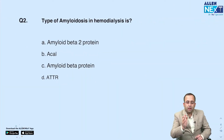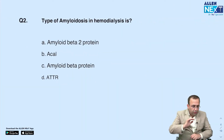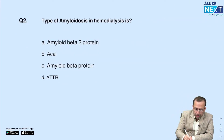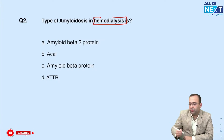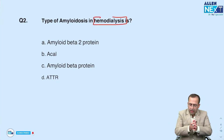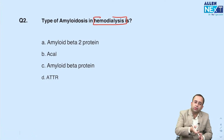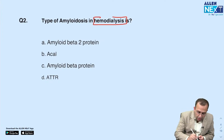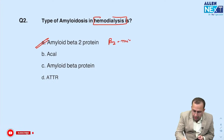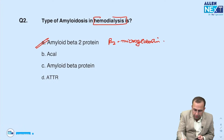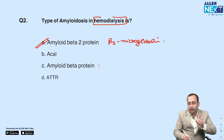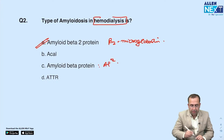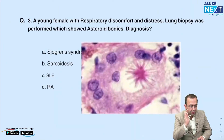Next, amyloidosis — everyone's favorite topic. Hemodialysis-associated amyloidosis: we have two kidneys, so it is associated with beta-2 microglobulin. Hemodialysis-associated amyloidosis → beta-2 microglobulin. We have one brain, so Alzheimer's disease is associated with A-beta amyloid.